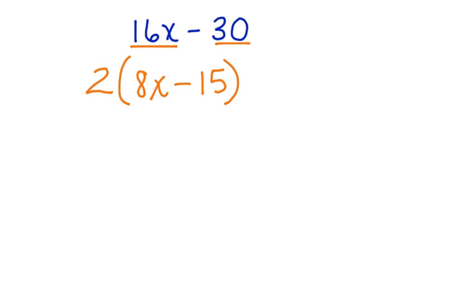Now let's look at factoring polynomials. Here's a polynomial, 16x minus 30. To factor this polynomial, we have to look for any values or variables that are in common between the terms. So the terms in this case are 16x and 30. We know that 2 can go into 16 and 2 can go into 30, so we can factor 2 out of this polynomial. When we take 2 out of 16x, we're left with 8x. When we take 2 out of 30, we're left with 15. This is how to factor this polynomial.